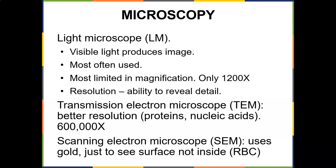1200 times magnification is still a lot, but nothing compared to a transmission electron microscope, which can do 600,000x. The light microscope also has the most limited resolution — the ability to reveal detail. There's no point magnifying if the image is still blurry, and that's what resolution refers to: how clear something is.